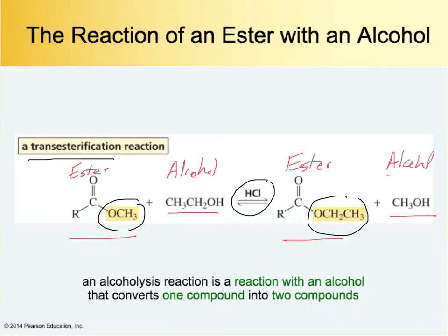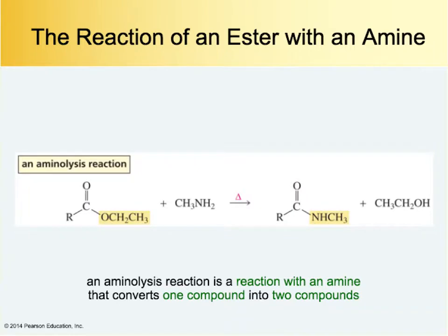Another reaction would be an ester with an amine. We're going downhill again because an ester is more stable than an amide. This is usually done with some heat. I would say they're using HCl to make this go as well, so this is usually done in acidic conditions. They call this aminolysis, essentially turning an ester into an amide.